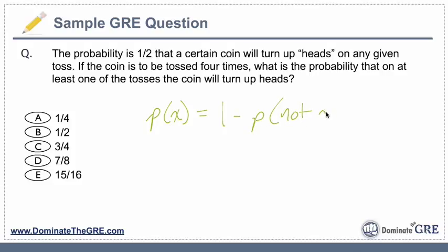So if I have time, I'll come back and talk through the actual math. But let's talk about logic and common sense. Let's assume, for example, that you don't immediately know how to solve this problem. Which answer choices make absolutely no sense?